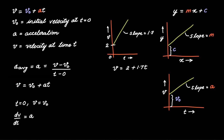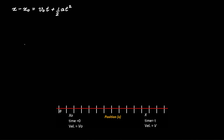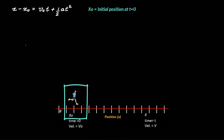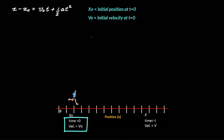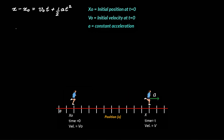Our second basic equation is x − x₀ = v₀t + ½at², where x₀ is the initial position at t = 0, v₀ is the initial velocity at t = 0, and a is the acceleration. Let us go ahead and do a derivation of this equation, which will bring a lot more clarity around how you should use it.